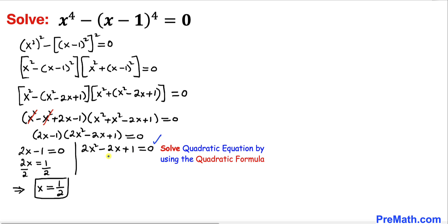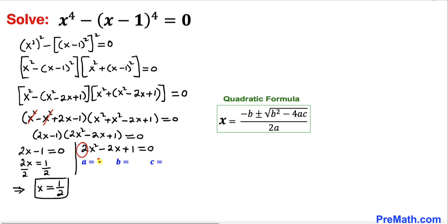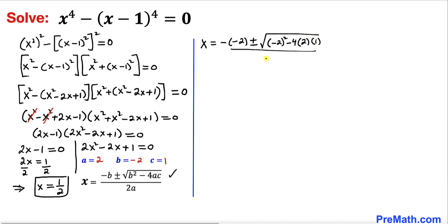The second equation is a quadratic equation and we will solve it using the quadratic formula. Looking for the coefficients: a equals positive 2, b equals negative 2, and c equals positive 1. Filling in the quadratic formula: x equals minus b, where b is negative 2, plus or minus the square root of b squared — that's negative 2 squared — minus 4 times a times c, all over 2 times a.